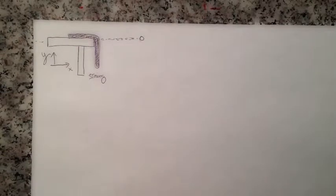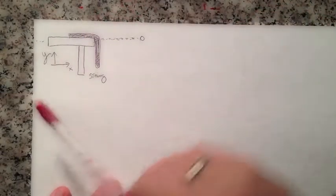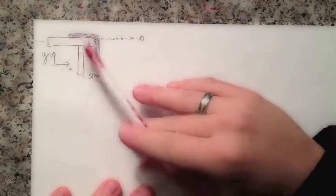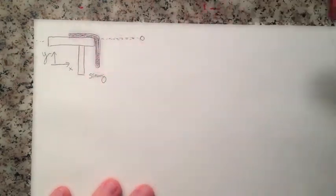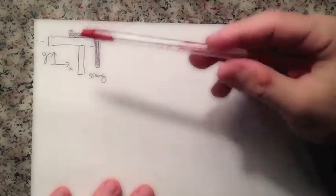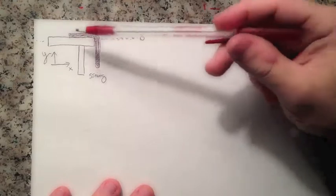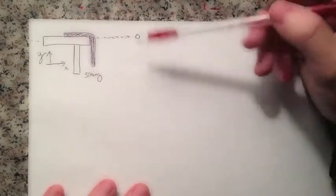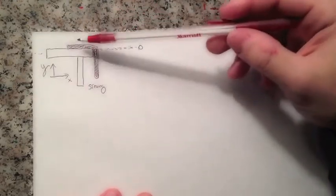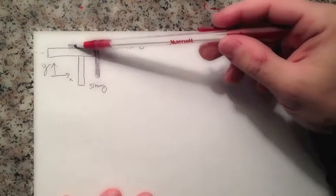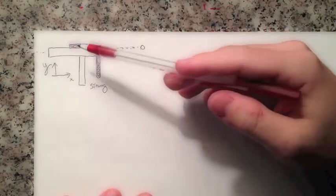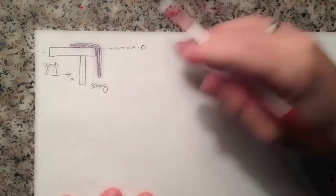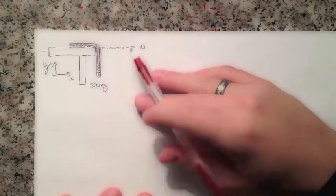Hello everyone! Today we're going to talk about a string sliding over a table. This is a problem of classical mechanics — it's easy to solve — but today we're going to use not Newton's laws directly, but we're going to use the Lagrangian to solve this problem.